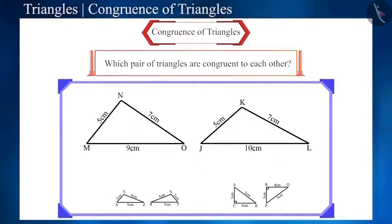Now notice the last pair. These triangles are not congruent to each other because the sides of these two triangles are not equal to each other.